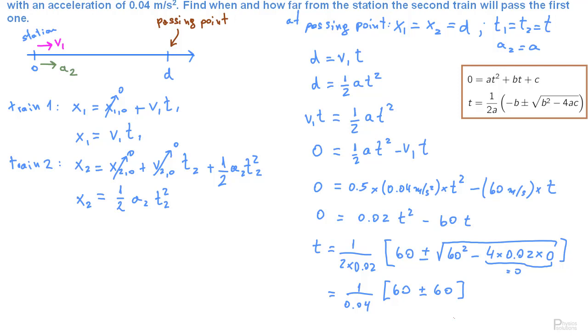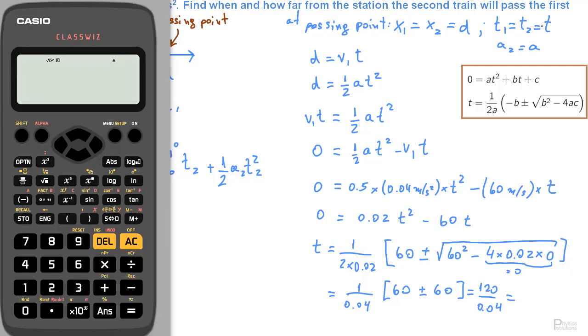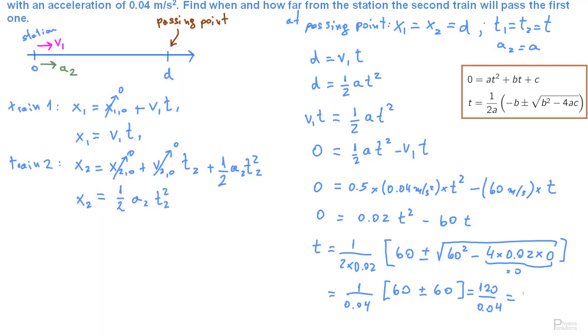And once again we have two solutions. So notice that if we use the negative solution, that means that we take the minus in this expression, we get 0. 60 minus 60 is 0. So this is not the interesting solution we're looking for. Therefore, we use the plus. 60 plus 60 is 120 divided by 0.04. 120 divided by 0.04 is 3000.